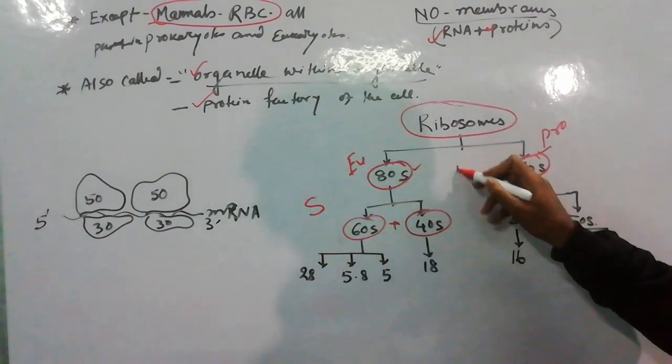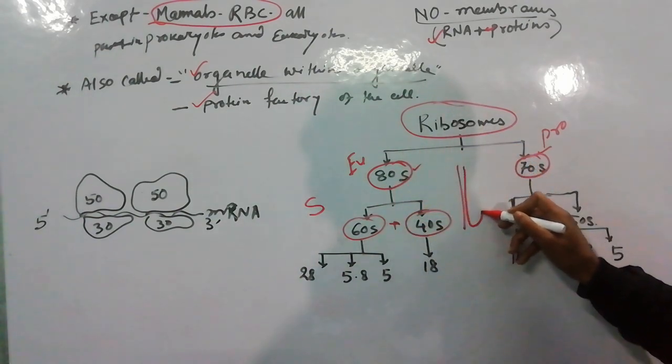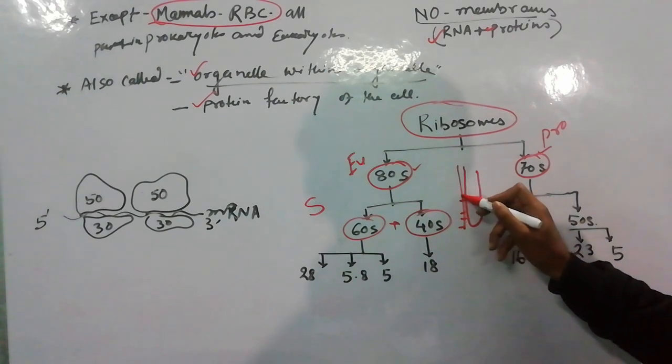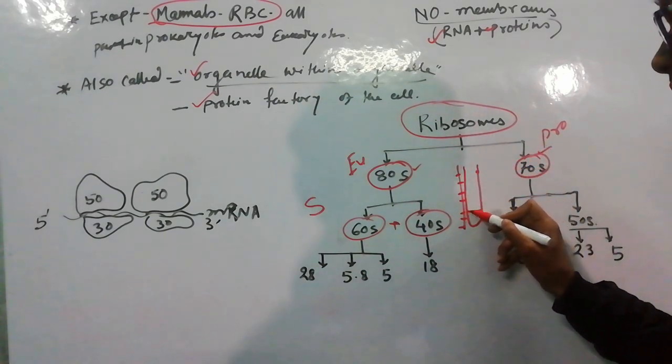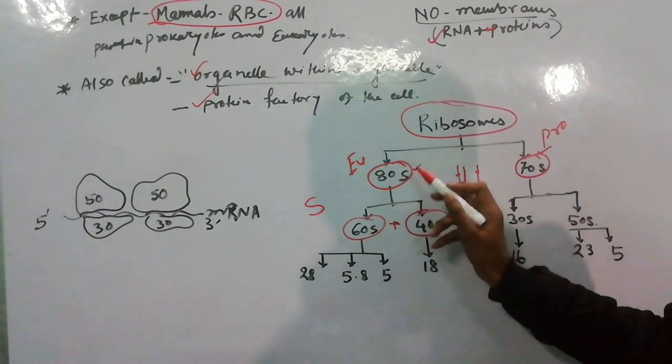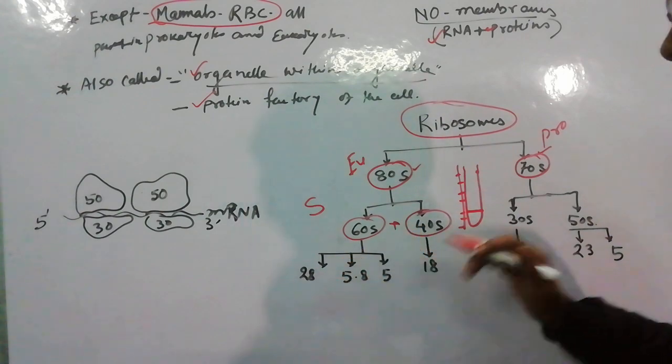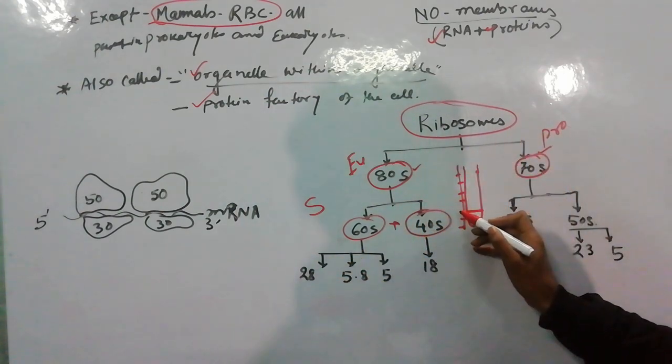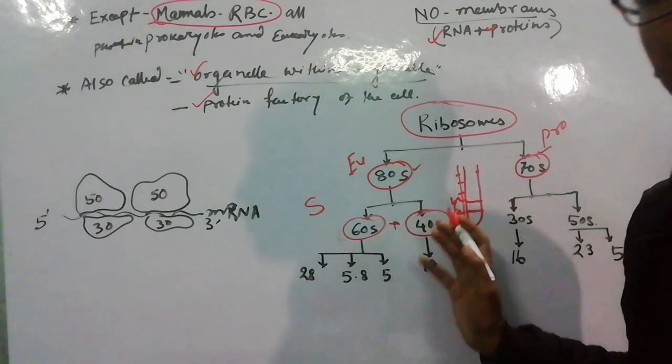This is sedimentation scale. When we centrifuge it, the sedimentation unit - wherever its precipitation occurs, according to that its nomenclature is done. If we dissociate it with detergent, disintegrate it, then we will get one band at 60 and one band at 40. That's why its subunit is called 60-40.